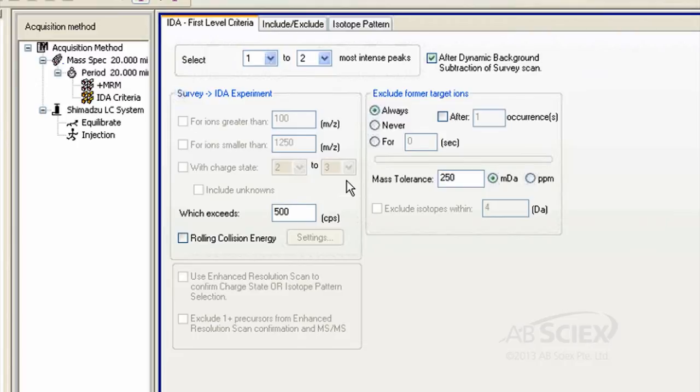And finally, set your Exclude Former Target Ions selection to Never. This just means that you will always trigger an EPI even if the peak had been previously detected in your chromatogram. You can leave the mass tolerance setting as the default.